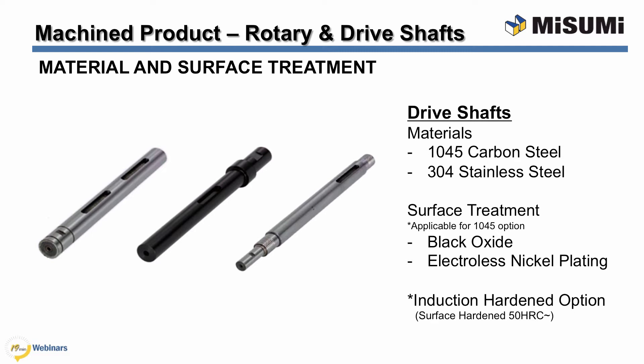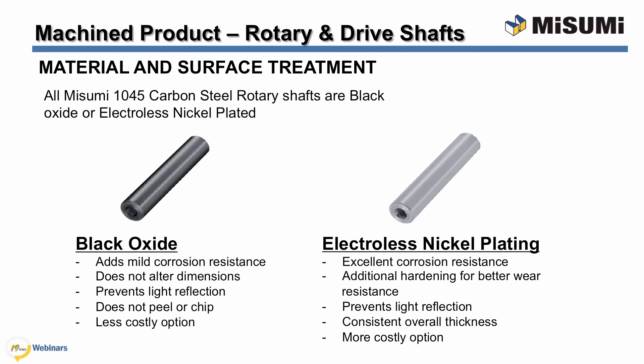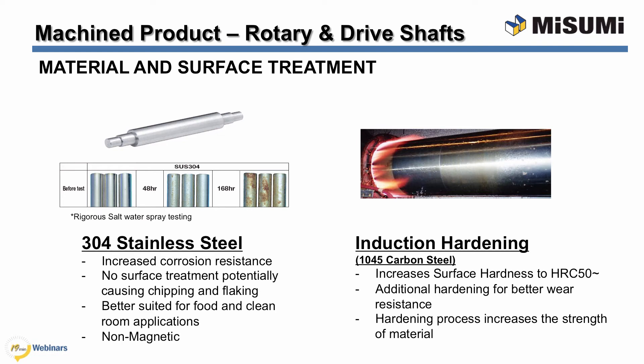Misumi also offers drive shafts with an induction harden option, as drive shafts are sometimes used directly mounted or coupled to a drive source and sometimes require extra strength. All Misumi 1045 carbon steel shafts come treated with either a black oxide or electroless nickel plate coating. The black oxide coating adds mild corrosion resistance and prevents light reflection, does not alter dimensions, and does not peel or chip — it is also the less costly option. Electroless nickel plating offers additional corrosion resistance and additional hardening for better wear resistance. Misumi also offers all rotary shaft options in 304 stainless steel, which is the best option for corrosion resistance, with no potential for chipping or flaking, and is best suited for food and clean room applications. 304 stainless is also non-magnetic.